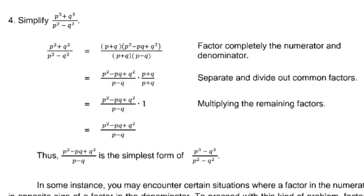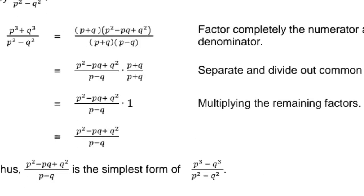Number 4: Simplify p cubed plus q cubed over p squared minus q squared. This numerator is a sum of two cubes, factoring as (p plus q)(p squared minus pq plus q squared). The denominator is a difference of two squares, factoring as (p plus q)(p minus q). The common factor is (p plus q). Separating gives (p squared minus pq plus q squared) over (p minus q), times (p plus q) over (p plus q), which equals 1. So the answer is p squared minus pq plus q squared over p minus q.